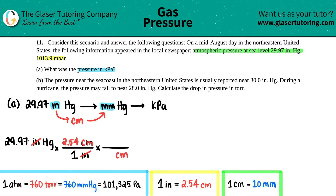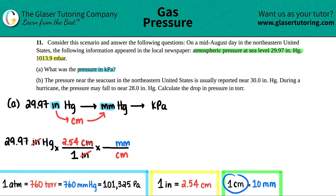We want millimeters, since the general unit for pressure in mercury is millimeters. A shorthand: for every 1 centimeter you have 10 millimeters. So put 10 millimeters on top and 1 centimeter on the bottom. The centimeters cancel out and now you're left with millimeters of mercury.